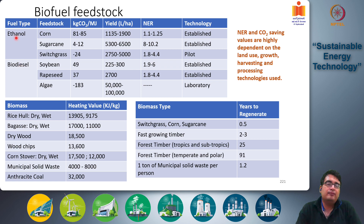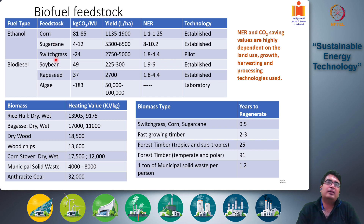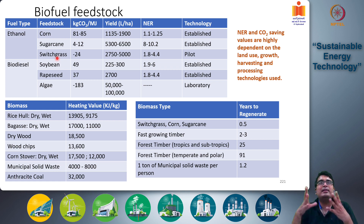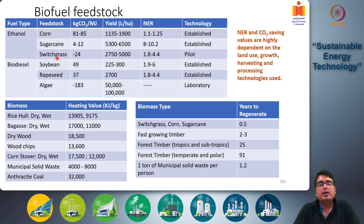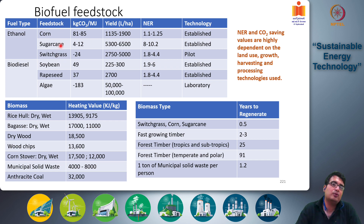For example, you can produce ethanol from crops like corn or sugarcane, or from a type of grass like switchgrass. Basically, you use a fermentation process by which you ferment the sugars present in corn syrup, sugarcane syrup, or the carbohydrates present in switchgrass and convert them into ethanol.